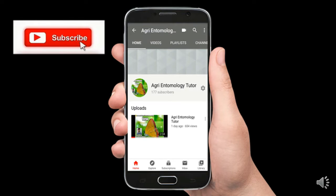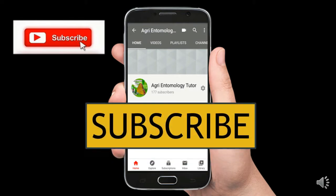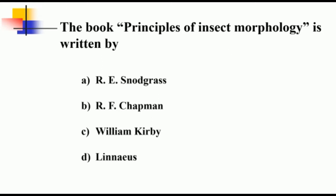So the first question is: the book Principles of Insect Morphology is written by R.E. Snodgrass.